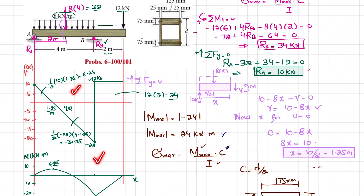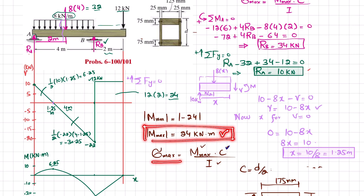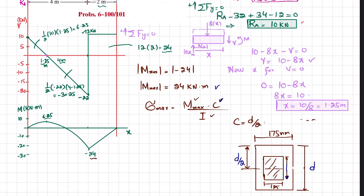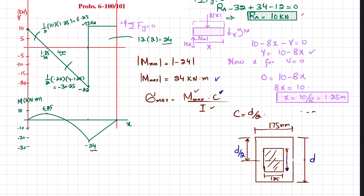Now draw the shear force and bending moment diagram — this is already explained in problem 6-100, so go and watch that to learn how the diagram is drawn. When you draw the shear force and bending moment diagram, you get the absolute maximum bending moment equal to 24 kilonewton-meters.